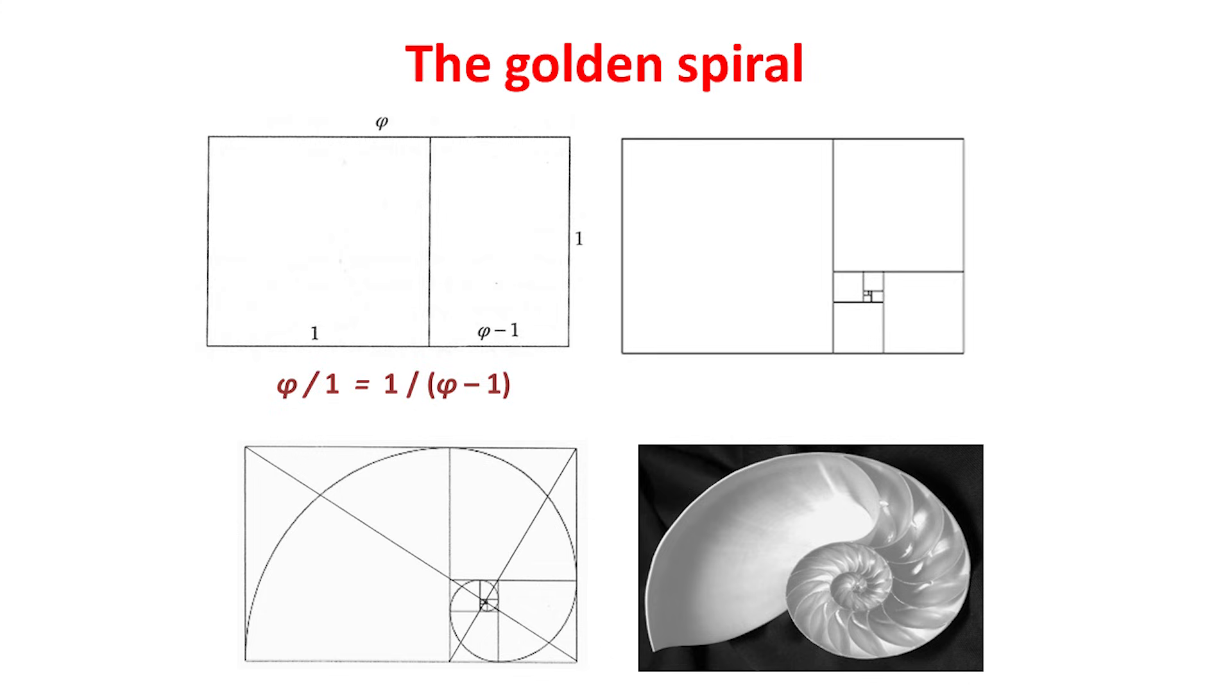And it's also a point where some artists, consciously or unconsciously, have placed the main focal point of their paintings to which the eye is naturally directed. Such a spiral is called a logarithmic spiral, and it arises in nature in the form of a nautilus shell, as shown on the right. It also appears in whirlpools, in the head of a sunflower, as we'll see later, and in other places also. So the golden ratio features in both art and nature.